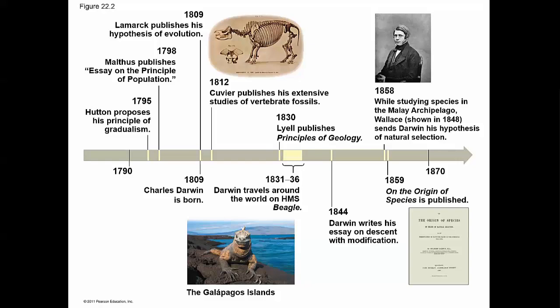Darwin originally wanted to be a minister, but now he was calling into question the way he was taught the world worked. Around the 1850s, another scientist named Alfred Russel Wallace did independent studies and came up with the same idea of natural selection, then sent it to Darwin to see what he thought. Darwin realized that if he wanted credit for what he'd created, he had to publish. So Darwin and Wallace both published their findings at the same time, and Darwin - having come up with it first and being the older scientist - received the most credit.